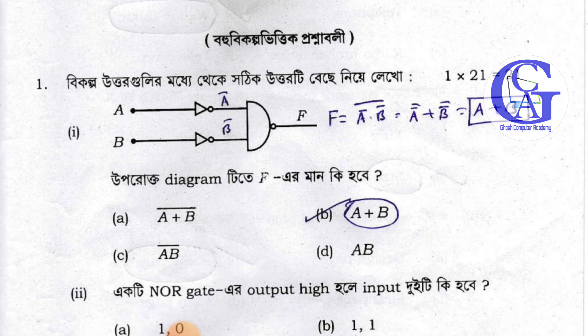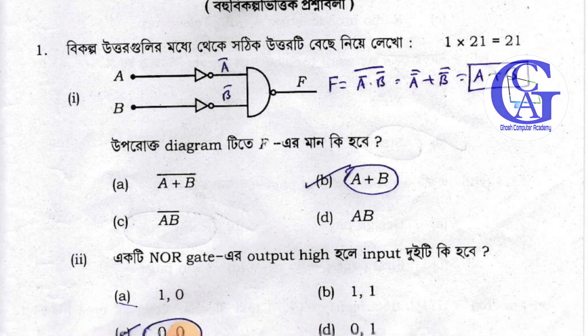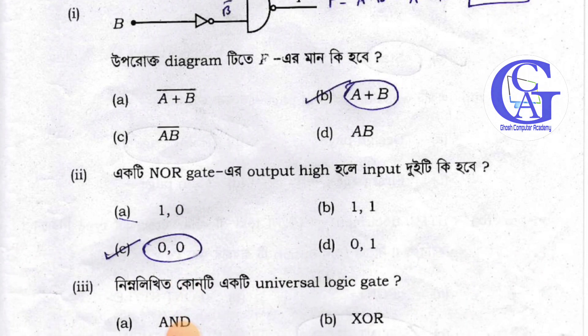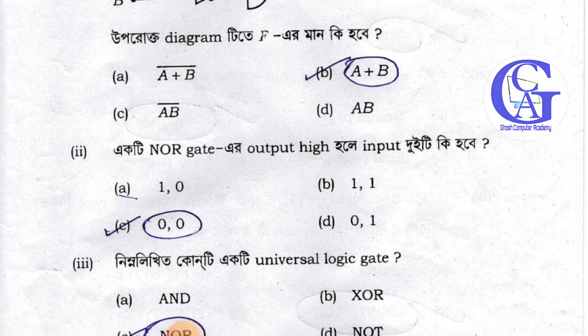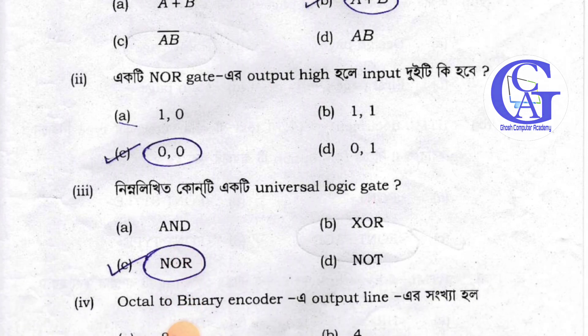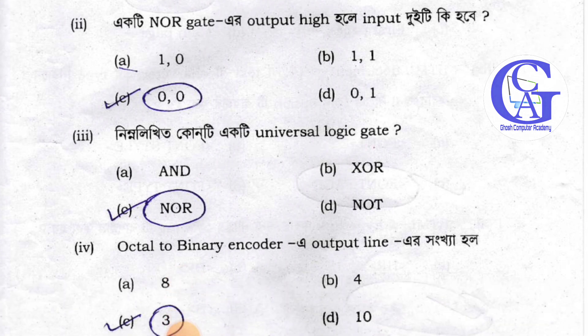Now, if you see A plus B, and the answer is C, meaning 0-0, but the output is high — high is 1. Answer 3 is NOR, N-O-R, which is a universal gate. NOR.